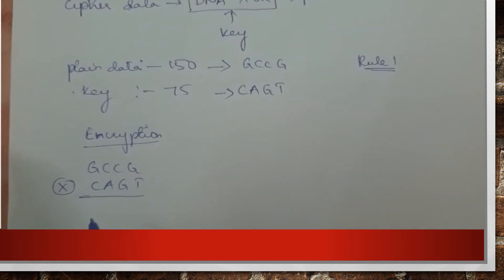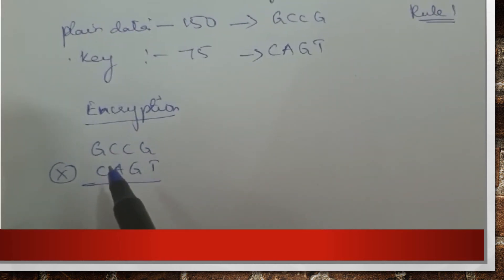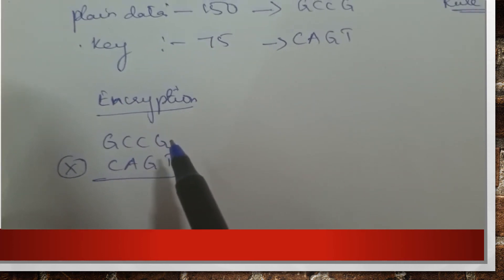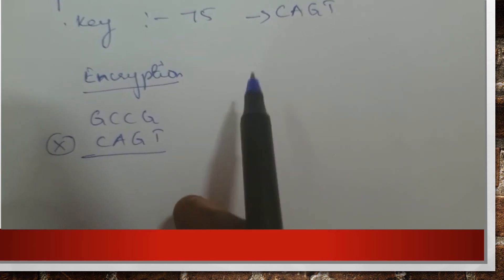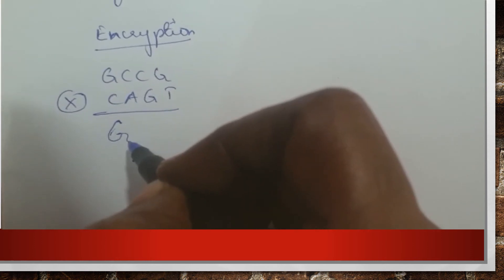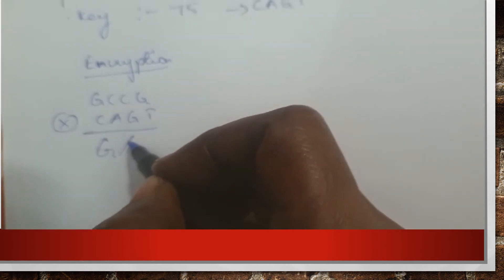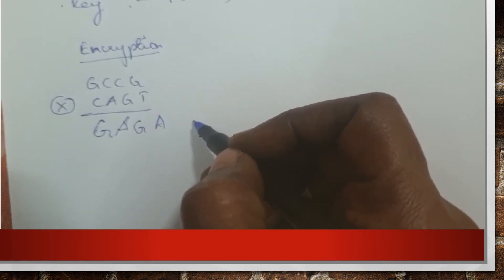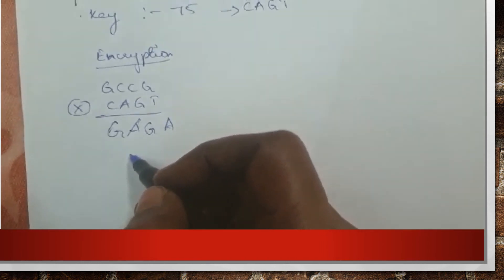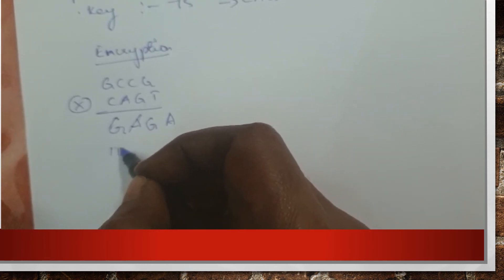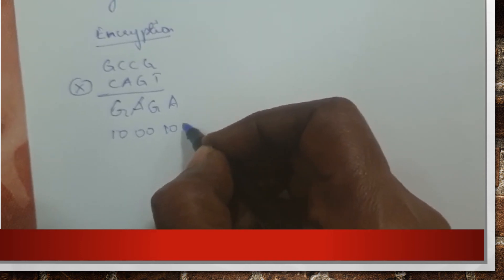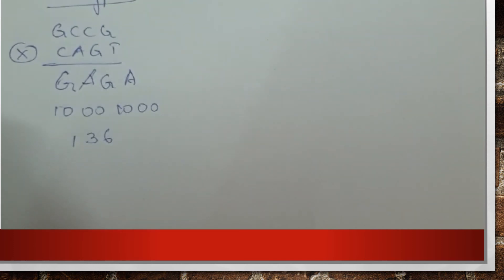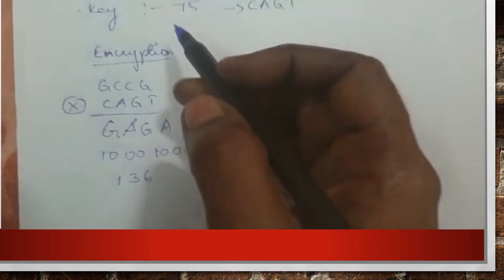Applying the DNA XOR rule table — the first column maps to the plain data and the first row maps to the key. For G and C we get G; C and A we get A; C and G we get G; G and T we get A. So the cipher data is GAGA. By applying rule 1 for decoding, we get 10 00 10 00, and converting to decimal we get 136. So 136 is the encrypted data of the given plain data 150.